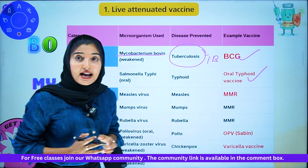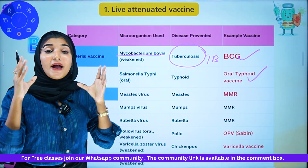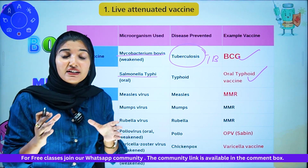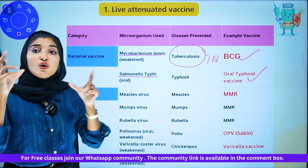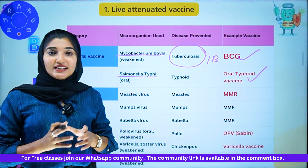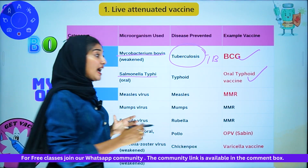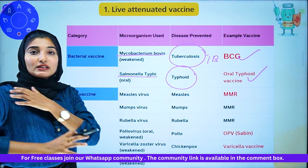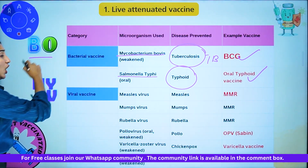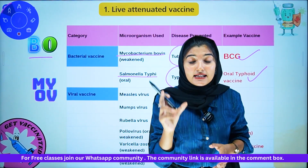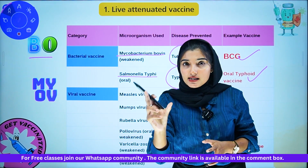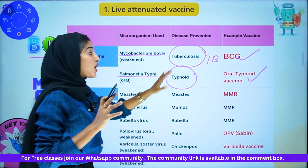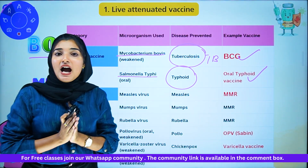The second bacterial live attenuated vaccine is the oral typhoid vaccine. The bacteria is Salmonella typhi. The disease it protects against is typhoid disease. So to summarize the bacterial live attenuated vaccines: B stands for BCG vaccine and O stands for oral typhoid vaccine — giving us the mnemonic 'BO'.